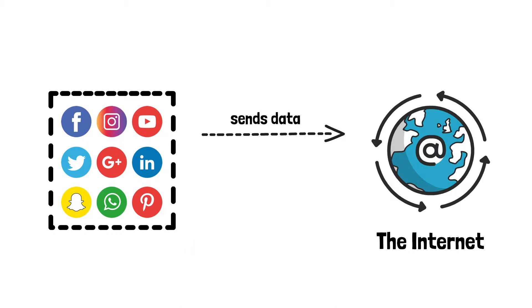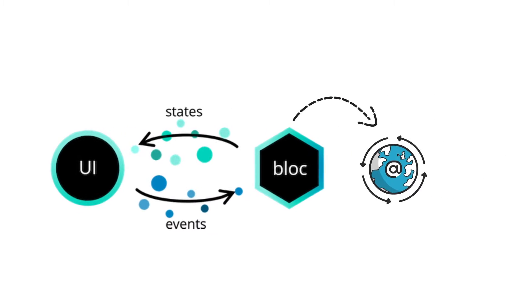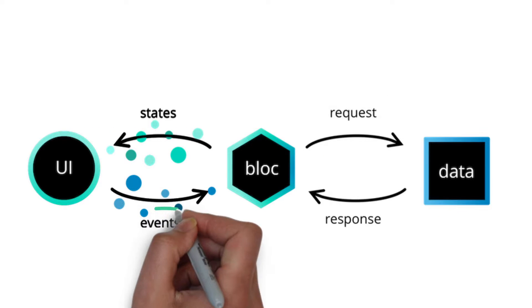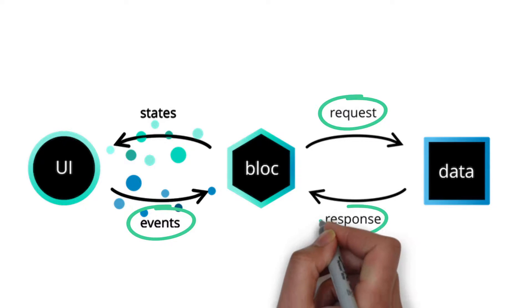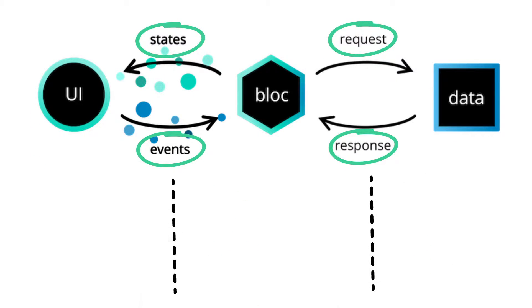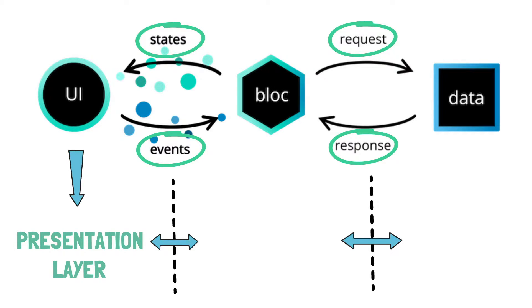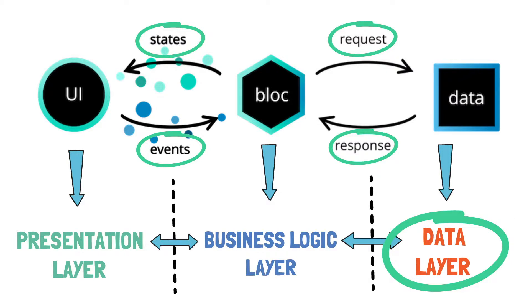The big unknown variable in this equation is how block processes the event and perhaps retrieves the necessary data to show to the user. Almost every app nowadays retrieves its data from the internet. So in order to link our block-based Flutter app with the outer data layer, we need to add the data layer into our equation. We can split this into three separate main layers: the UI as the presentation layer, the block/cubit as the business logic layer, and the app's data as the data layer. We're going to start with the data layer, which is farthest from the user interface, and work our way up to the presentation layer.